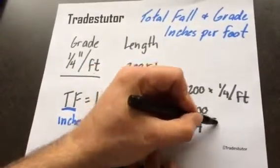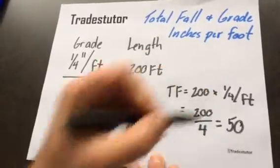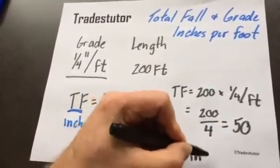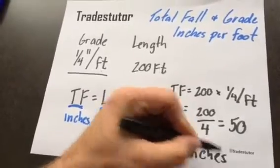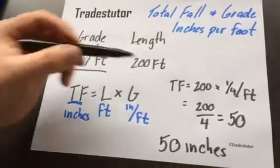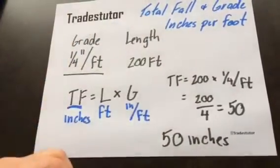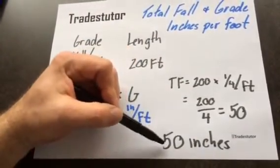You can say that's like saying it's 200 over 4, which is equal to 50, and that is 50 inches. So in 200 feet at a grade of quarter inch per foot, that piece of pipe will fall 50 inches.